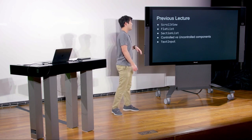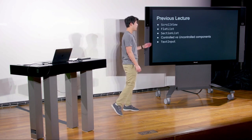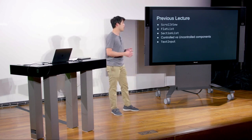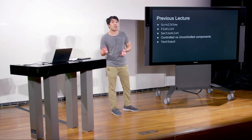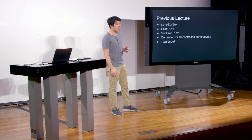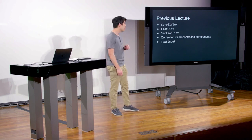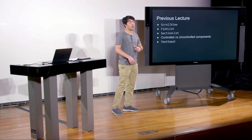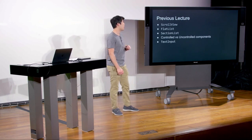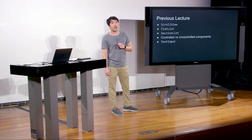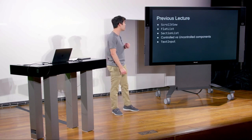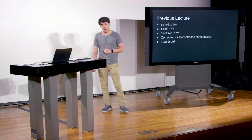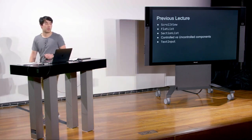We then started to talk about user input. We talked about the difference between controlled and uncontrolled components. Controlled components track state and the source of truth for the input's values are on the component state itself, whereas uncontrolled components are those where the DOM, or in the case of the browser, the browser itself keeps track of those input values. We talked about text input, which is the component used to accept user input.